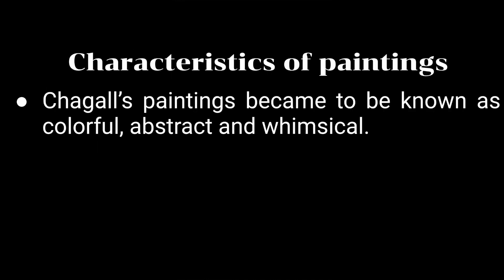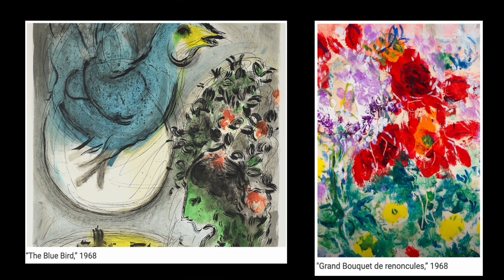Some of the characteristics of his most famous paintings are colorful, abstract, and whimsical. Some might even describe his paintings as what we would see in a dream. Here are some examples. This was in 1968 at the end of his career, but as you can see, there are many colors, abstract forms, and not a lot of realism — paintings that are very different from real-life things.